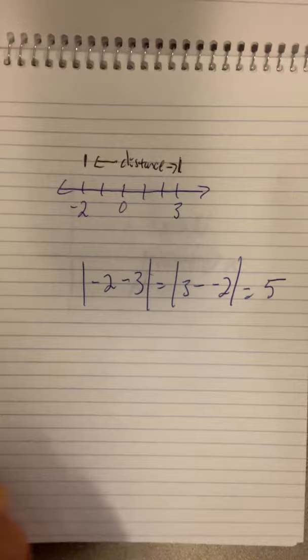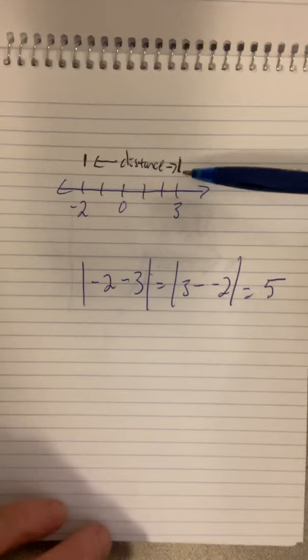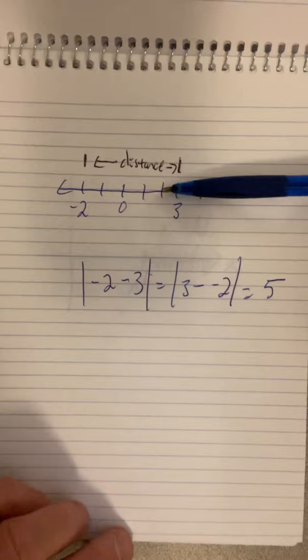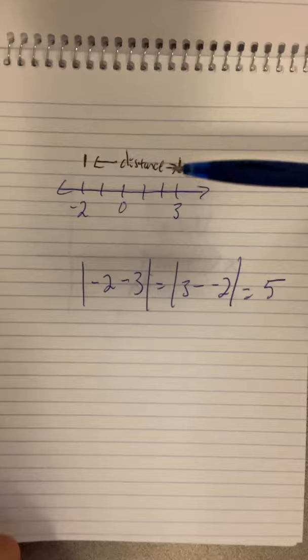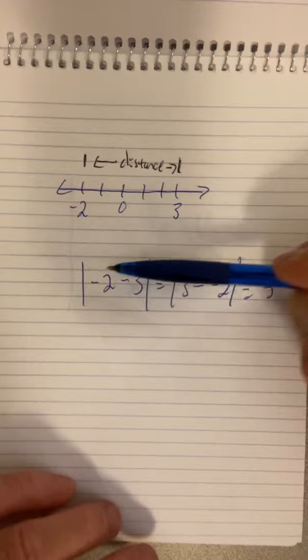Recall first that when we want to find distance between quantities, we can subtract. So 3 minus 2, if this was a positive 2 here, 3 minus 2 is 1, so the distance from 2 to 3 is 1. Now, if I did 2 minus 3, I'd get a negative, so that's what the absolute value is for.